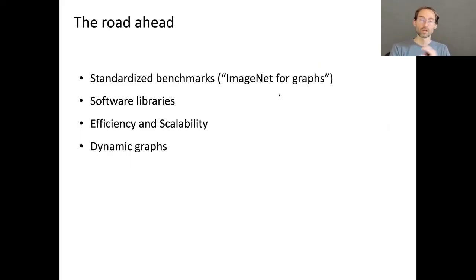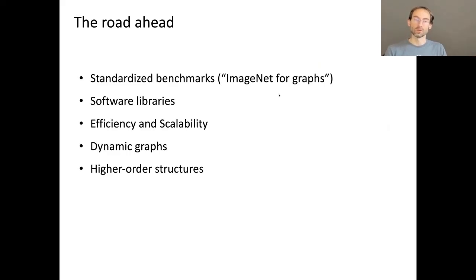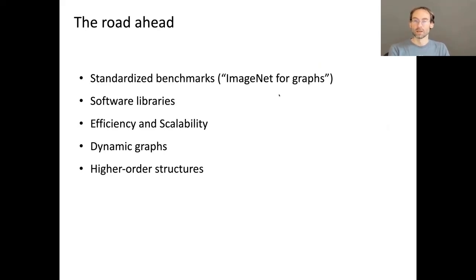Another challenge is dynamic graphs. Many graphs — especially social networks — are not static: they change all the time and are better thought of as a stream of asynchronous events. Most works in the graph learning literature consider only nodes and edges in message passing, but in many complex networks — biological, social — it is actually higher-order structures that matter. Certain motifs or graphlets are more prominent in nature than in simple random graphs, and these structures are not taken into account. GSN is a simplistic approach to account for them. We really want to go beyond message passing and extend it to higher-order structures.